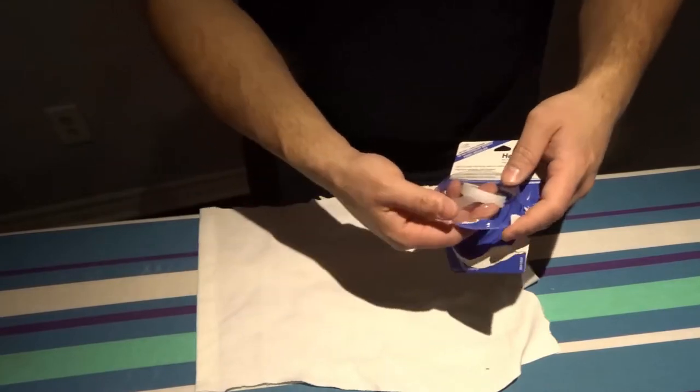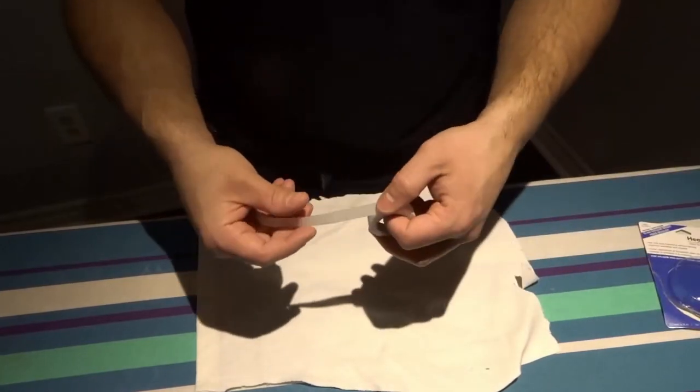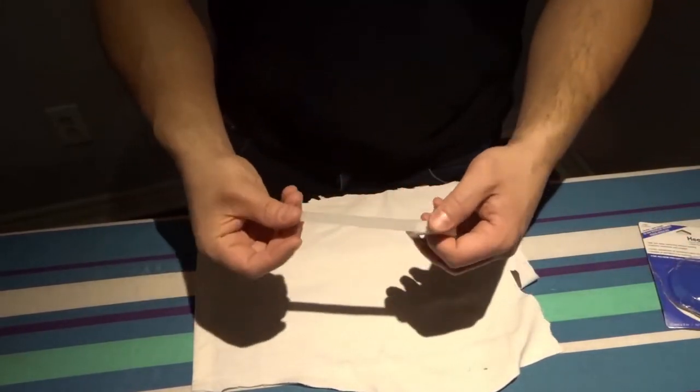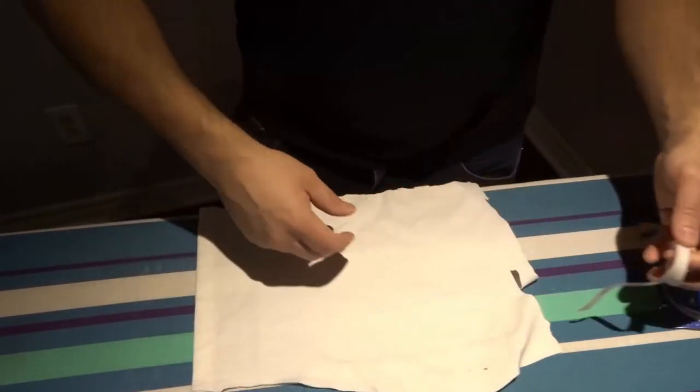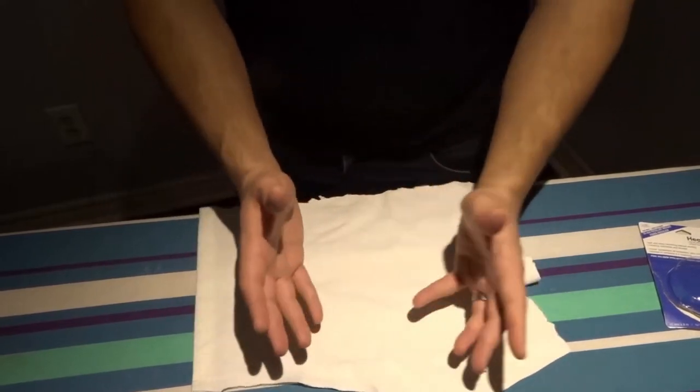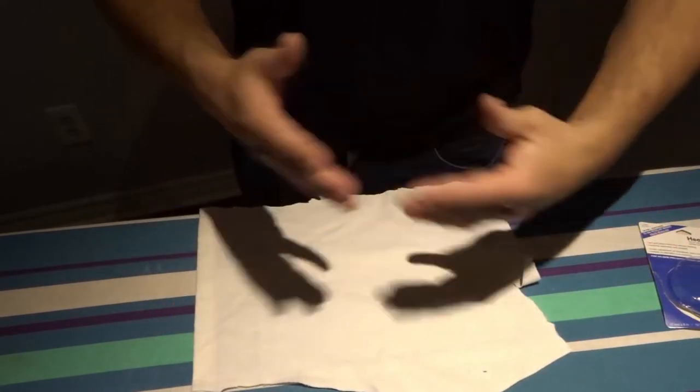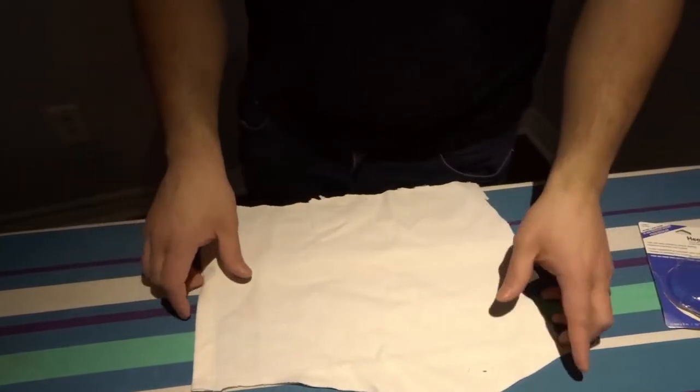Basically it came in this package and you want to choose the size that works for the medium that you're using. So here's how to do it. You're going to use this iron-on tape to actually bond pieces of fabric together. So it allows you to hem things without actually sewing, which is fantastic.